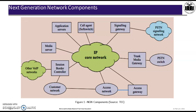This is the Next Generation Network components diagram — this is an important slide. At the center, the component is the IP Core Network. The primary function of this component is to provide the routing and transport of IP packets.